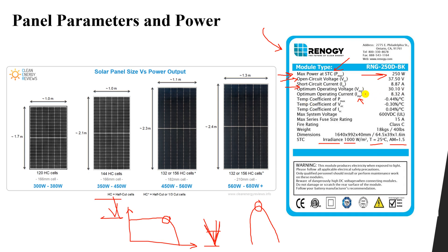On the curve, this is the voltage axis and this is the current axis. The short circuit current is shown here. If you multiply 30.1 V by 8.32 A — the values at maximum power — you will get the 250 watts.